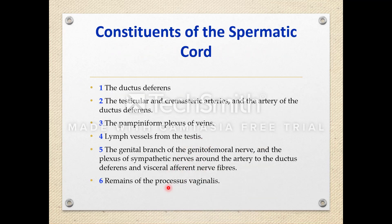The contents of the spermatic cord (which are also contents of the inguinal canal) include: the ductus deferens (vas deferens); three arteries — testicular artery, cremasteric artery, and artery of the ductus deferens; the pampiniform plexus of veins; lymph vessels from the testes; the genital branch of the genitofemoral nerve; and remains of the processus vaginalis.